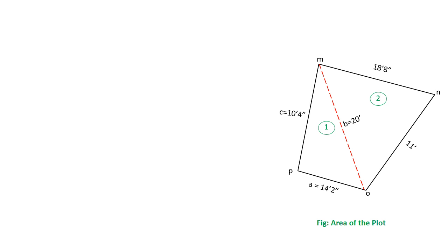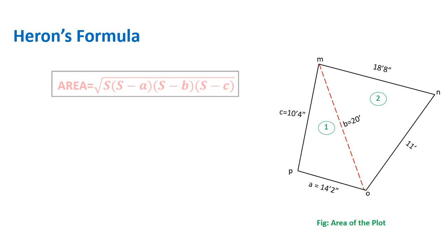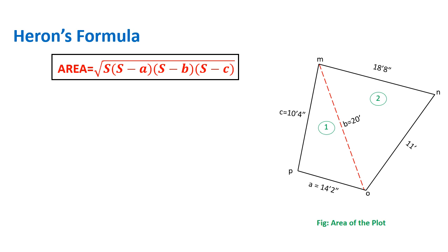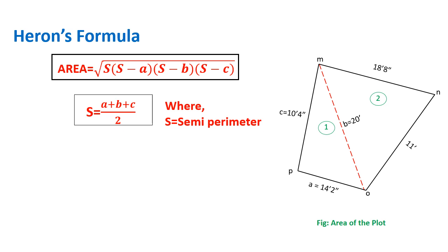Firstly, I will find the area for section 1. Let's consider the distance from O to P as A, from O to M as B, and from M to P as C. The area of this type of irregular shape can be calculated using Heron's formula: root under S times (S minus A) times (S minus B) times (S minus C). We know the values for A, B, and C, but S is unknown. Here, S is the semi-perimeter — that is, half of the sum of all sides.